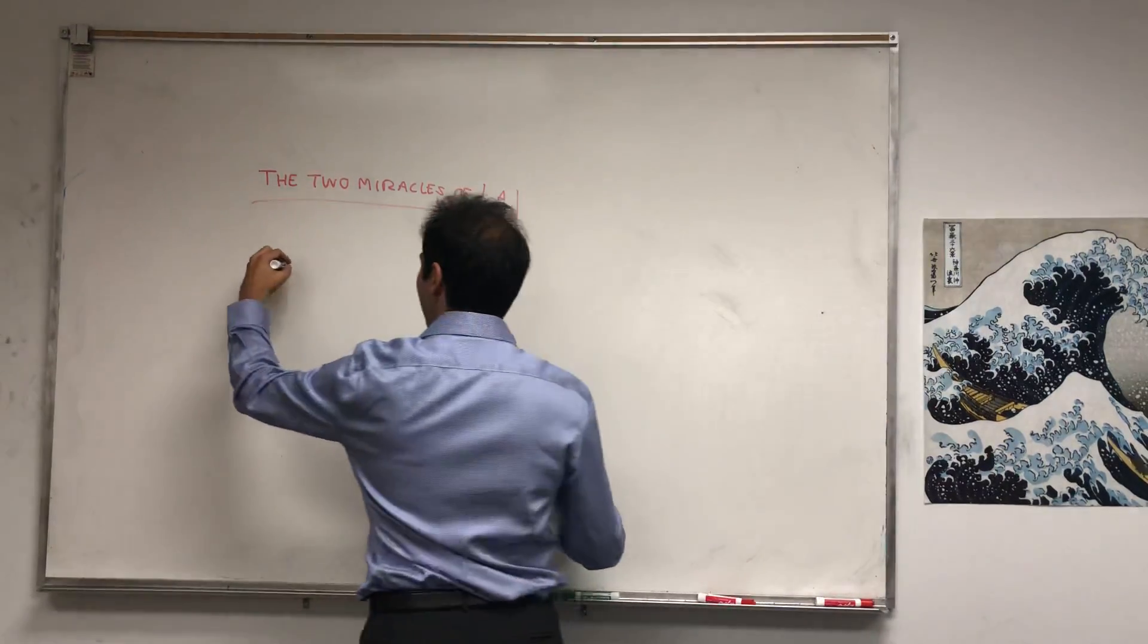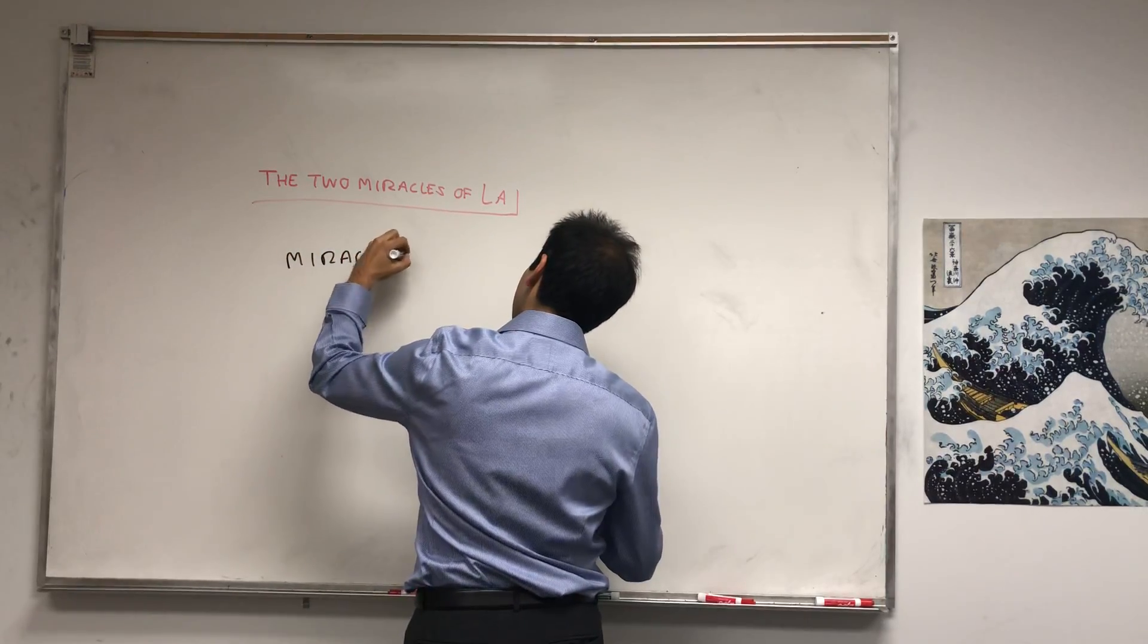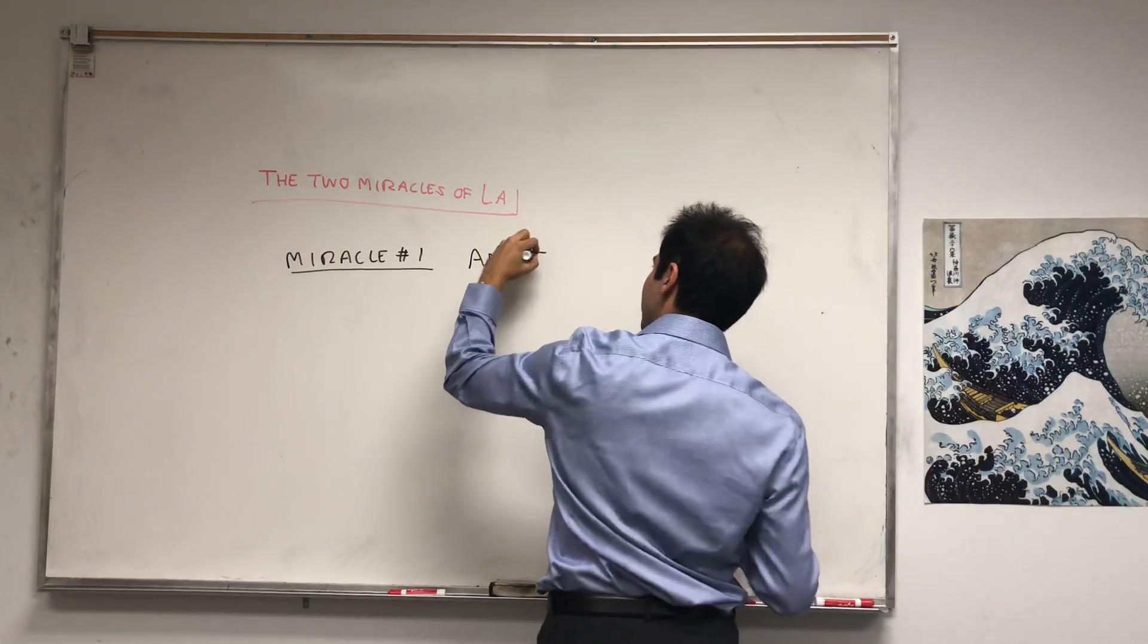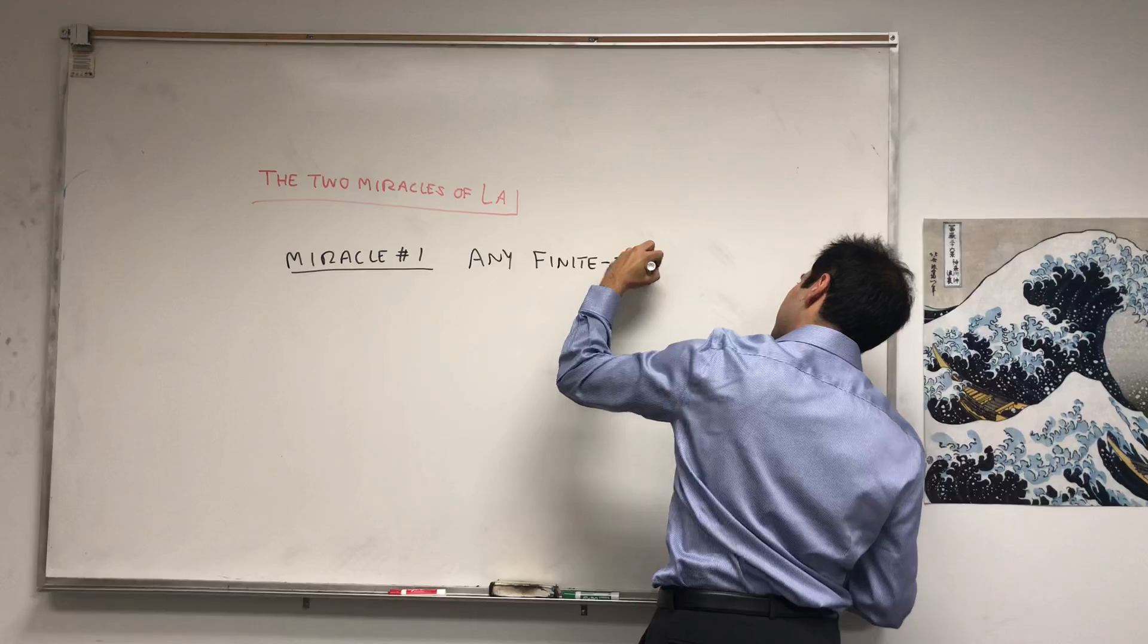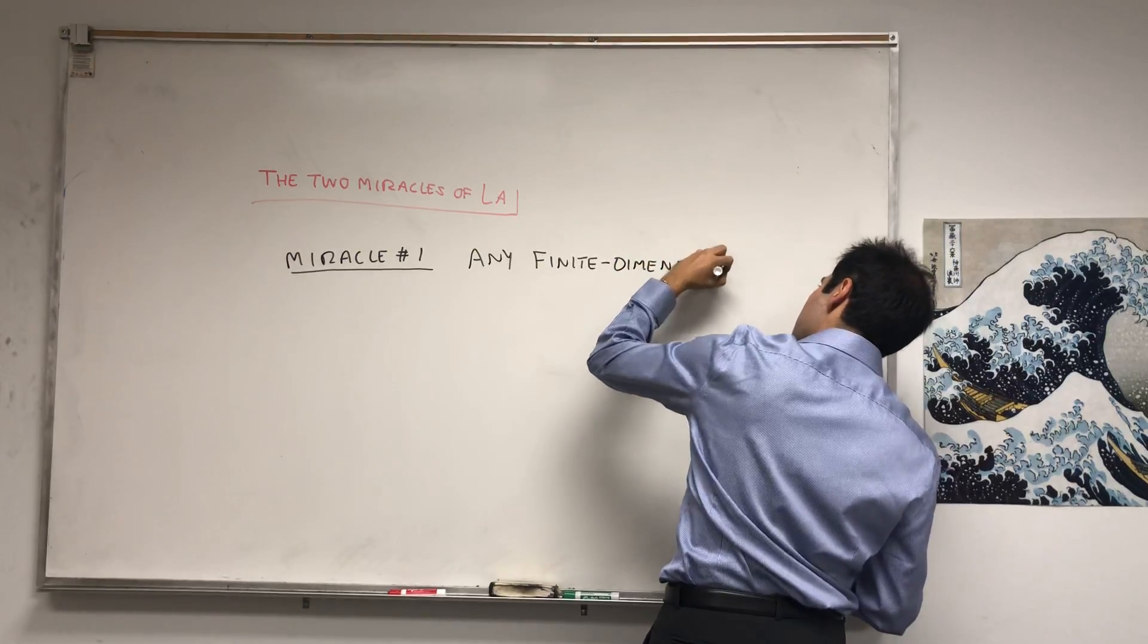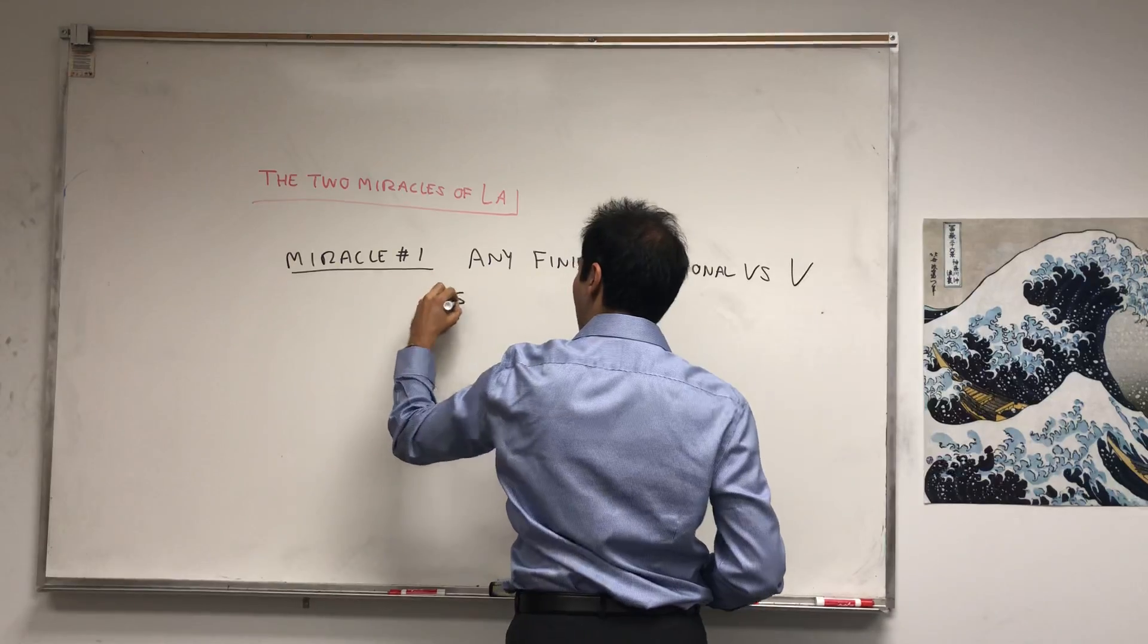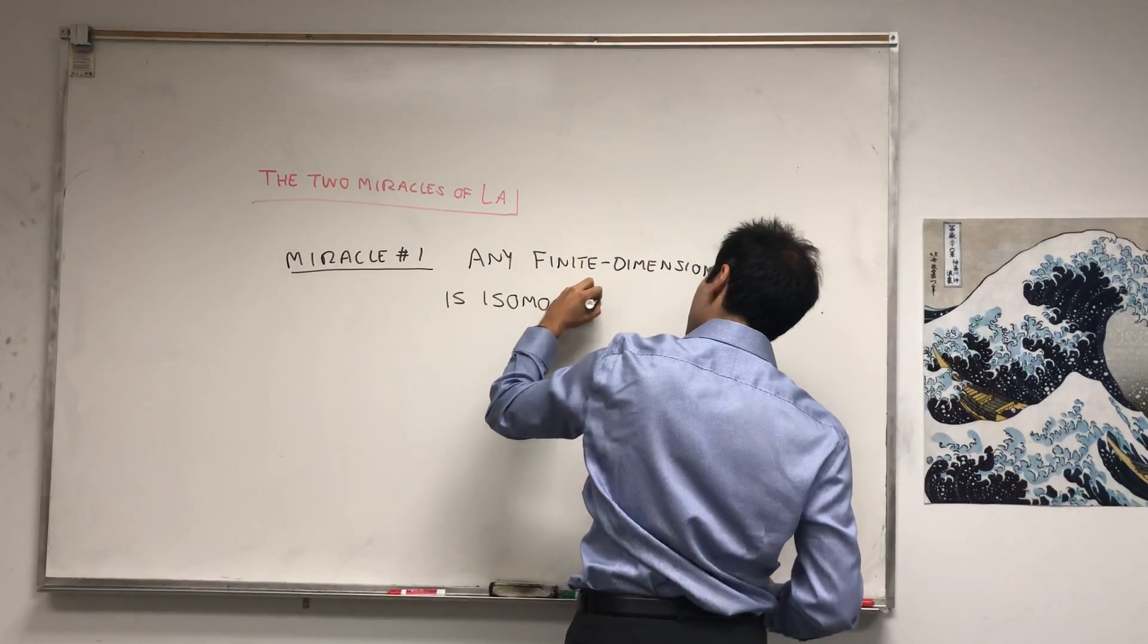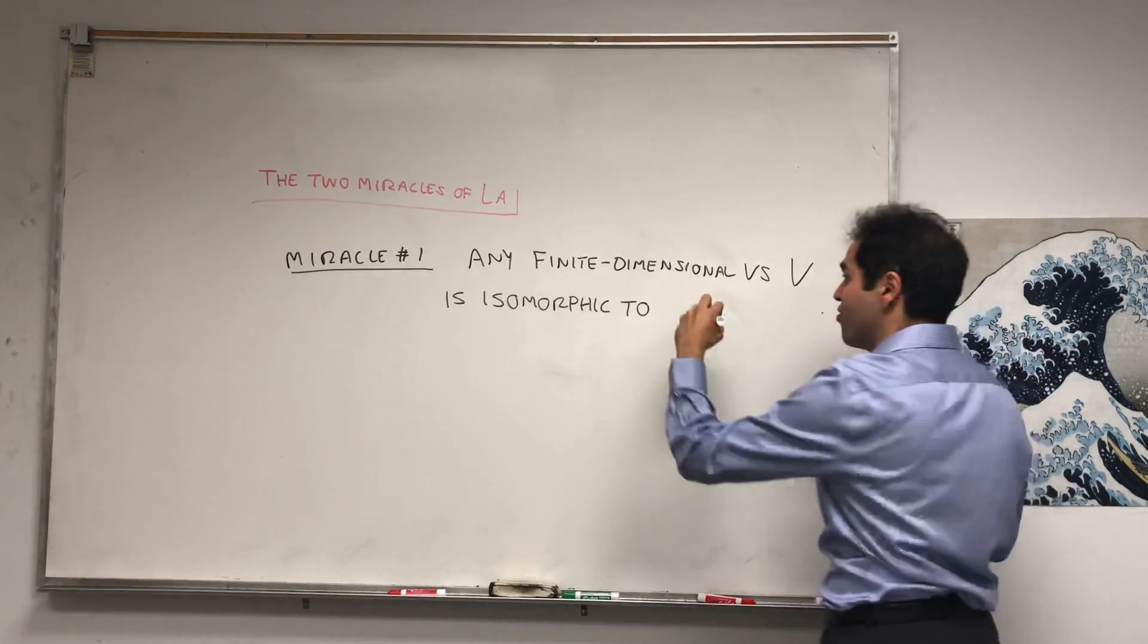In other words, miracle number one: any finite-dimensional vector space V is isomorphic to R^N, or in general F^N for any field. So F^N for some N.